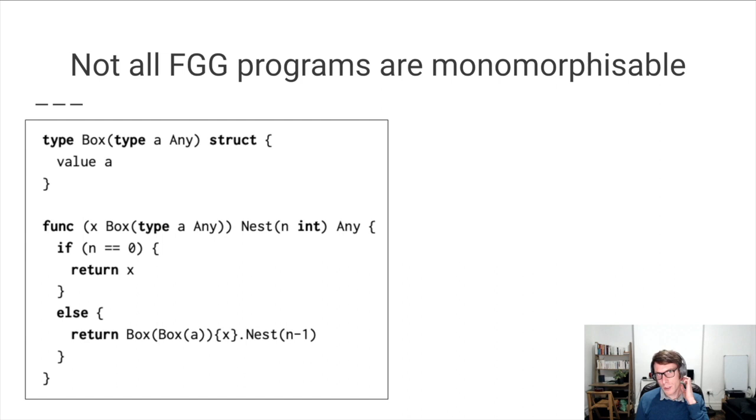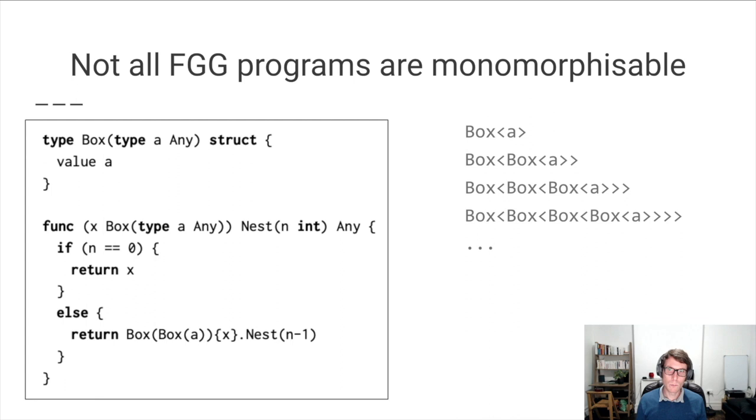As I said, not all FGG programs are monomorphizable. In particular, programs that use polymorphic recursion may not be monomorphizable. For instance, this method nest is recursive. And at each recursive call, it adds a level of nesting to this box type here. So if we had to analyze this method statically and conservatively, we would see that we would need infinitely many instances of this box type.